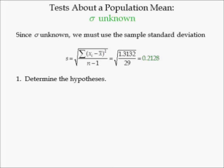Step 1 involves determining the hypothesis. Since the filling process is continued if the sample results are consistent with the assumption that the mean filling weight for the population of Coke bottles filled is 16 ounces, the null hypothesis is the population mean mu is equal to 16 ounces, while the alternative hypothesis must be the population mean mu is not equal to 16 ounces. If the alternative hypothesis is true, the process should be adjusted.